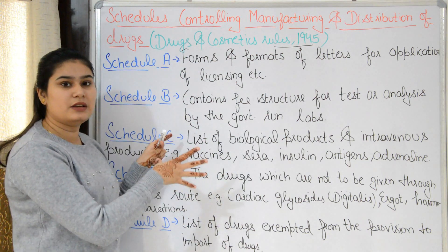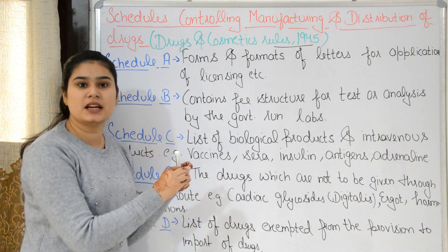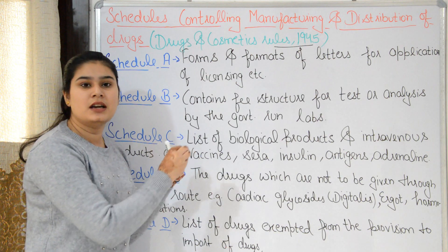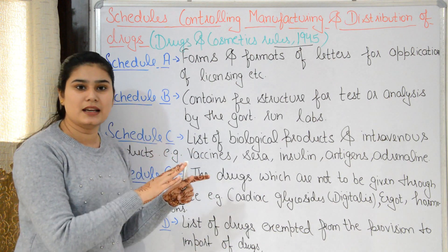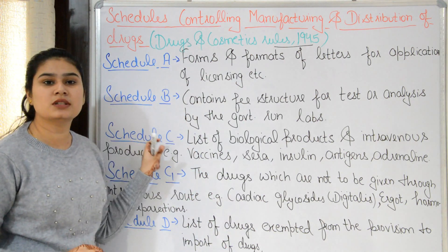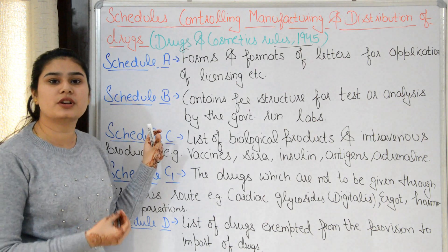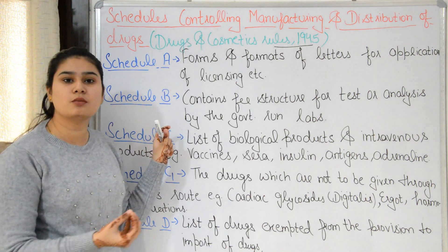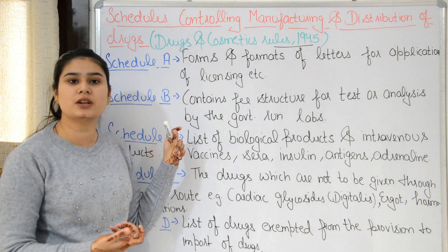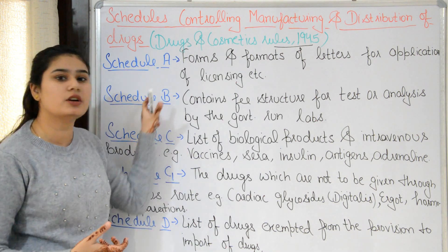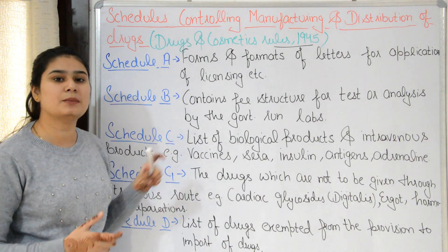In schedules, there are different categories of drugs — different categories of drugs are placed in different schedules. These schedules control the regulation of drugs: distribution, storage, importation, and manufacturing. So one by one, we will study these schedules.